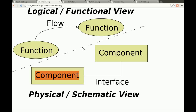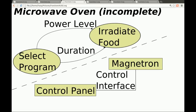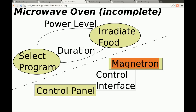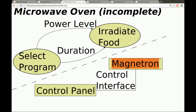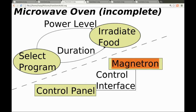Rather than dwell on the abstract, I thought I would dig into a concrete example — a microwave. What we've got here is the control panel of the microwave and the magnetron. This is a highly simplified version. Physically, there's a control panel where I'm going to press buttons and program the microwave oven to cook my food, and there's a magnetron. The control panel has an interface to the magnetron — we're going to have to design the control panel, the magnetron, and the interface between them.